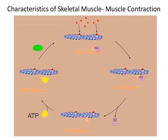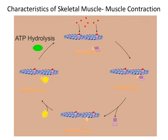Next, ATP binds to the myosin head. The binding of ATP to the myosin head causes the myosin head to detach from the active binding site of G-actin — this is called detachment. Finally, ATP is broken down into ADP and phosphate in a process known as ATP hydrolysis. This reconfigures the myosin head from a bent position to an upright position so that another crossbridge can be performed.